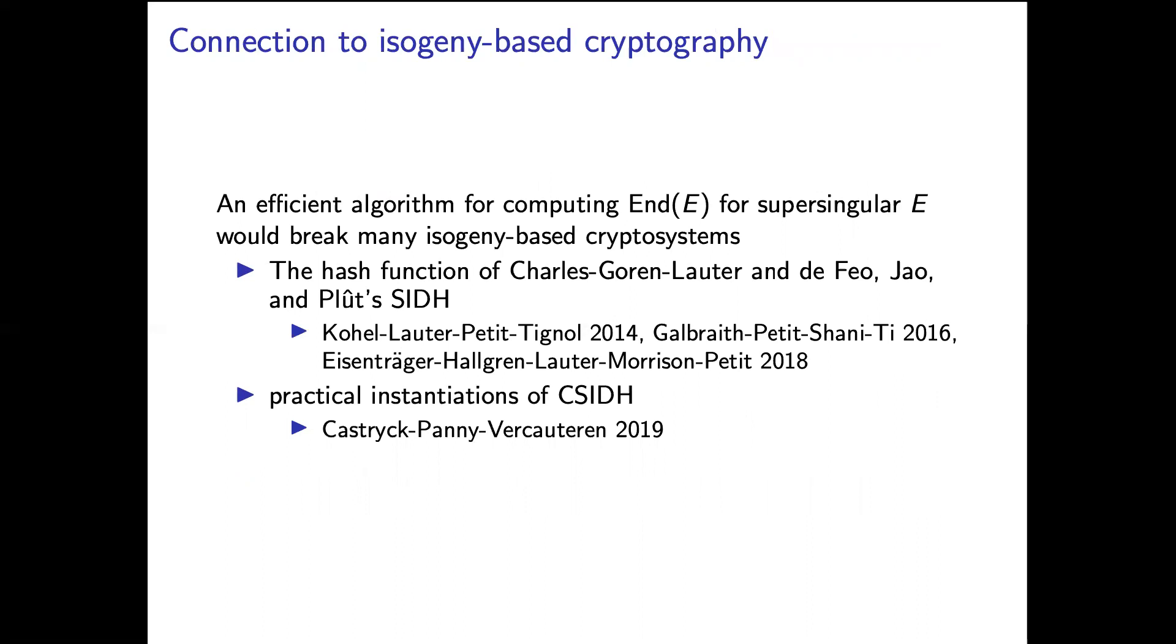So this problem is certainly interesting in its own right, but it's also important because it's connected to the security of several isogeny-based cryptosystems, which are post-quantum. So these are cryptosystems that are believed to be secure even against an adversary with a quantum computer. For example, if one has an efficient algorithm computing the endomorphism ring of a supersingular curve, you could use it to break several cryptosystems like the hash function of Charles, Goren, and Lauter or the key exchange SIDH of De Feo, Jao, and Plût, and it could also be used to break practical instantiations of CSIDH.